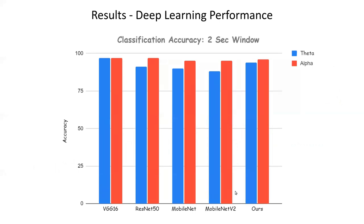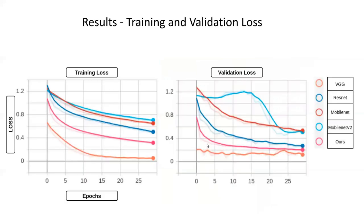We also used VGG-16, ResNet-50, MobileNet, and MobileNet V2 for comparison. We obtained 97 percent accuracy with VGG-16 and more than 90 percent with the other networks. Our model performed equivalently to these networks. We also compared training and validation loss — training loss reduces as epochs increase. Our model is comparable with the VGG network.